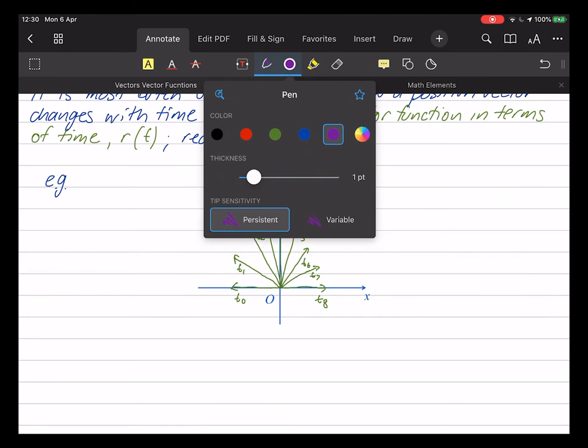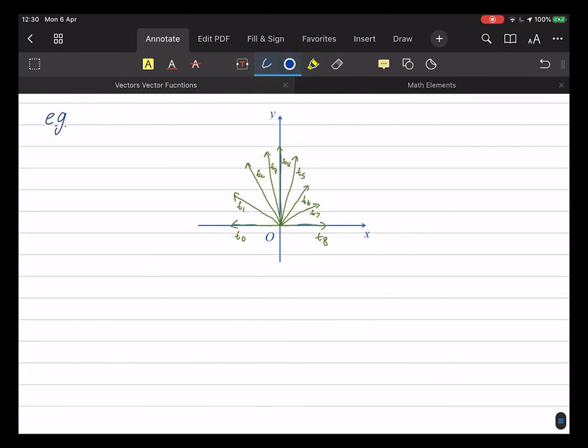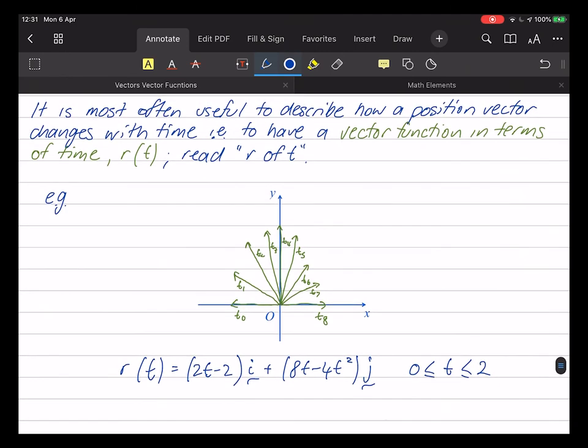And the formula for such a function might be something like this. So I have r of t equal to 2t minus 2 i plus 8t minus 4t squared j. And I'm going to limit t between 0 and 2.